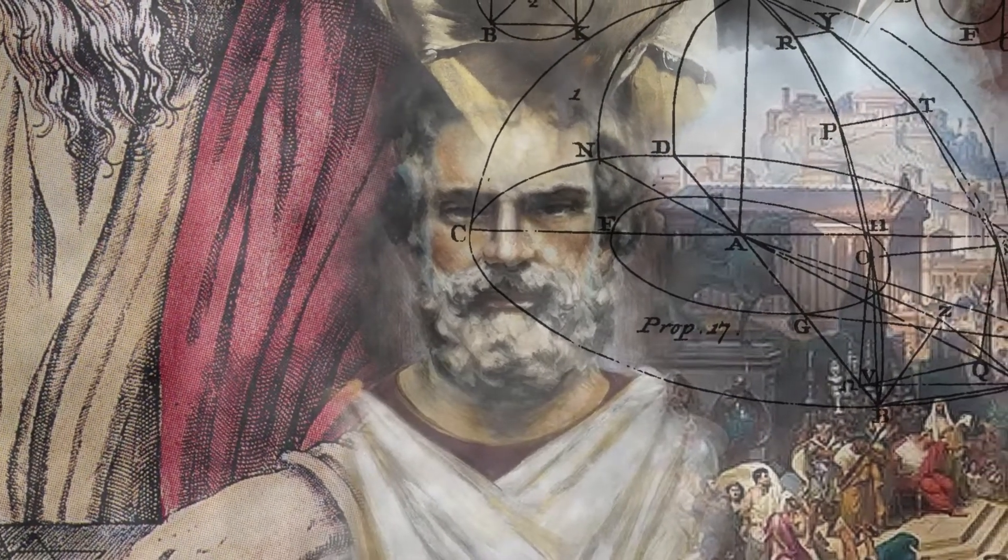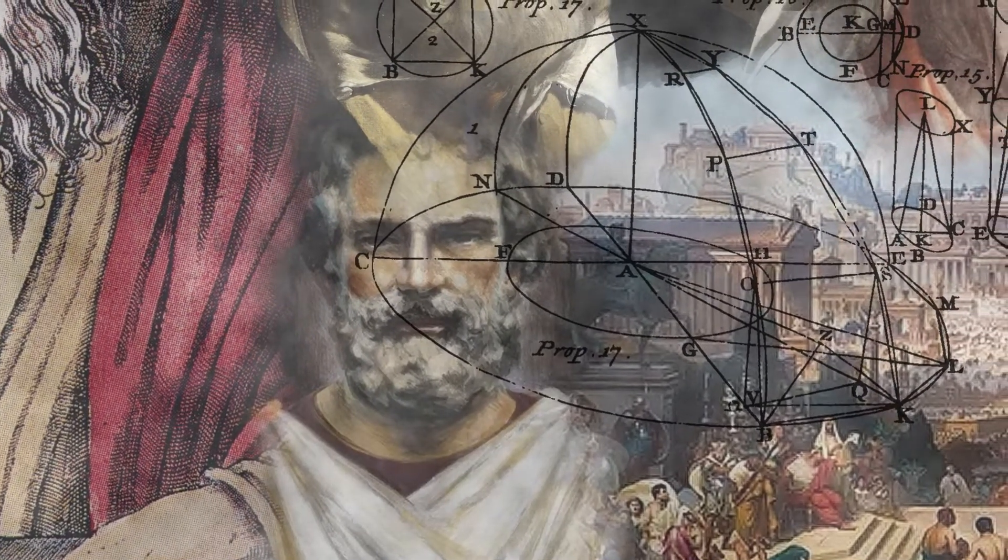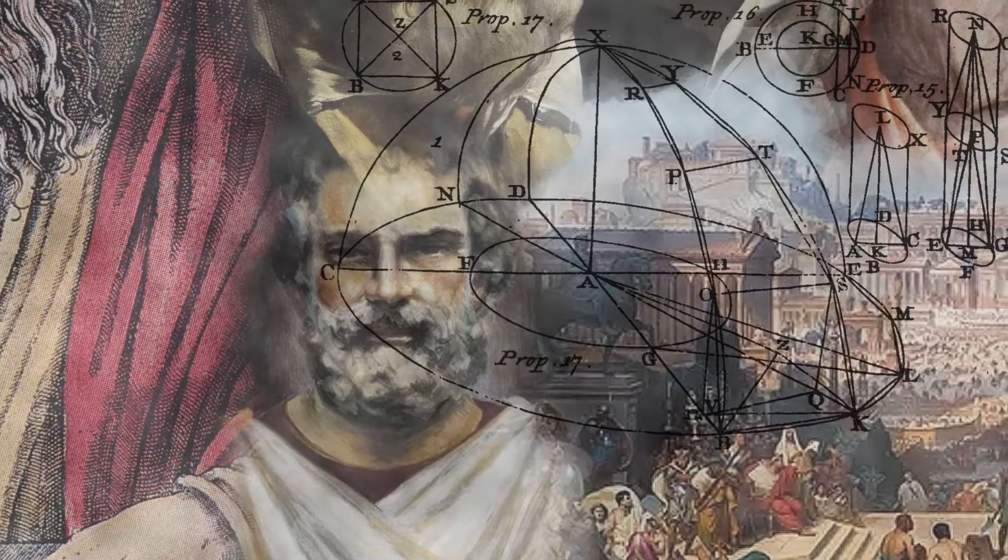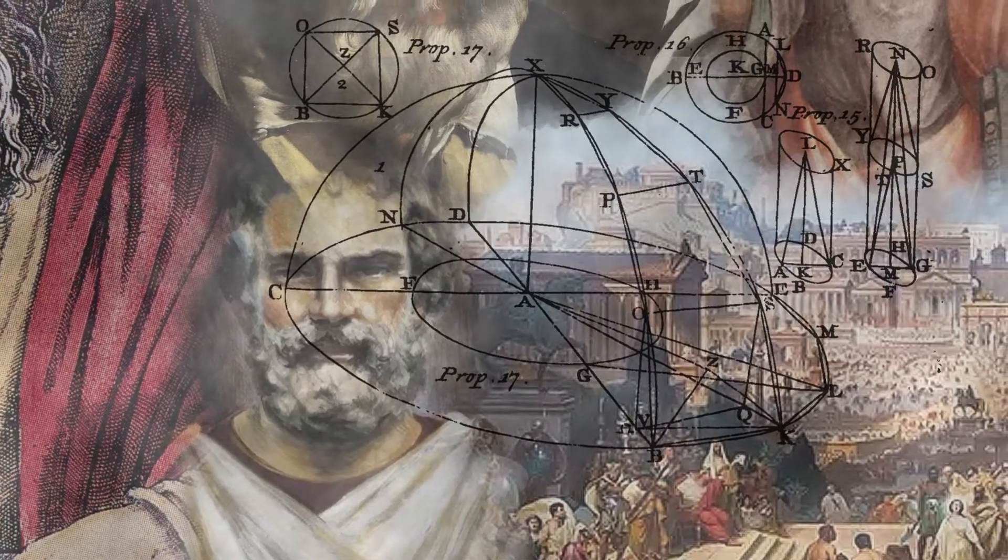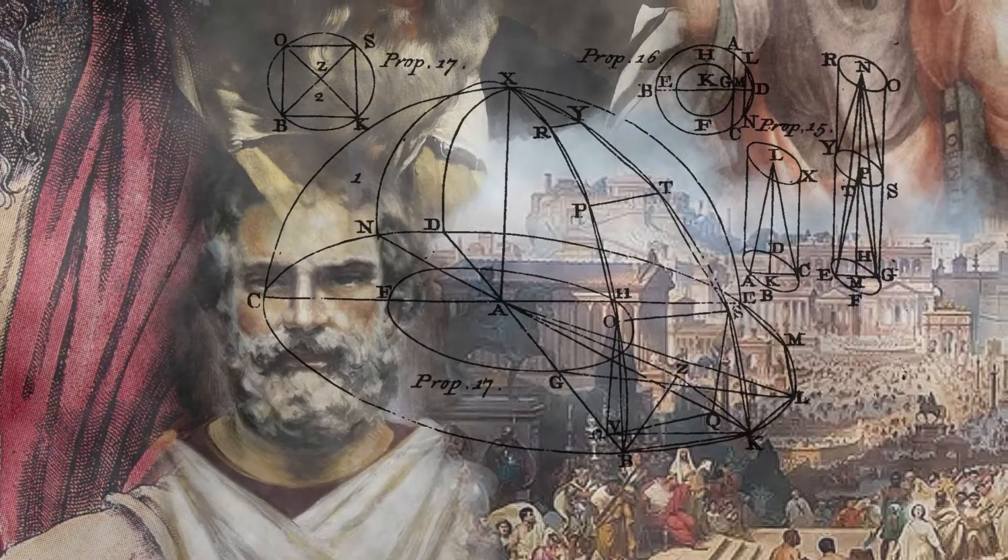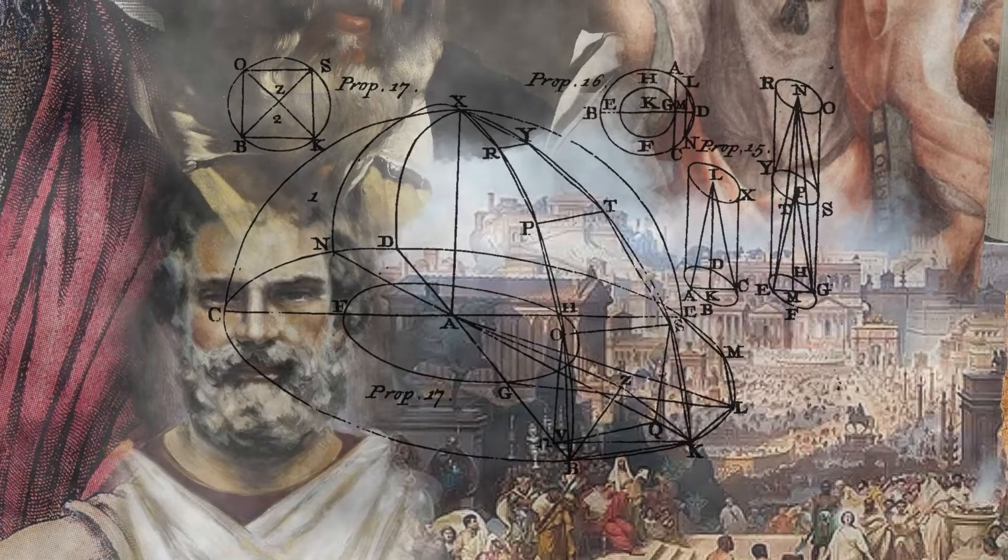Yet it was Euclid who encapsulated their approach to thinking in such a thorough and foolproof way that its lasting adoption was guaranteed. Indeed, we don't know much about the life of Euclid the man. It is believed that he lived around 300 BCE in the great Egyptian city of Alexandria.